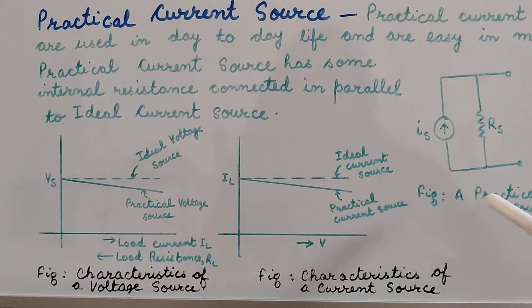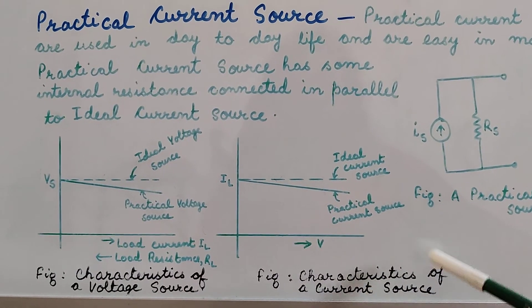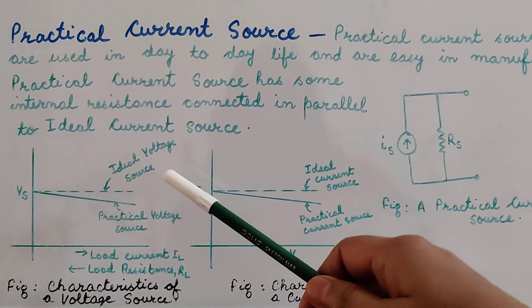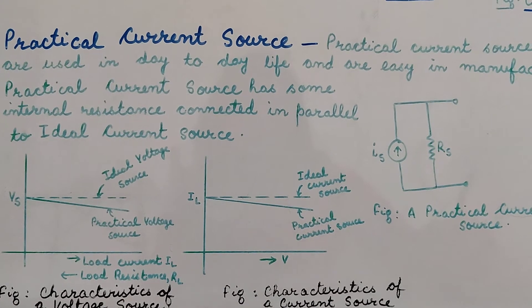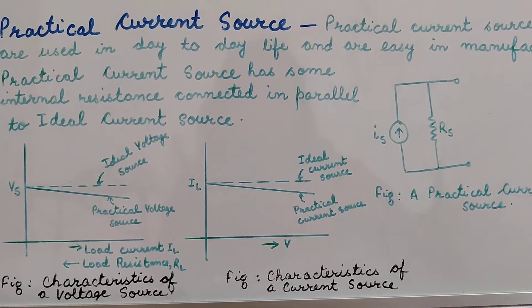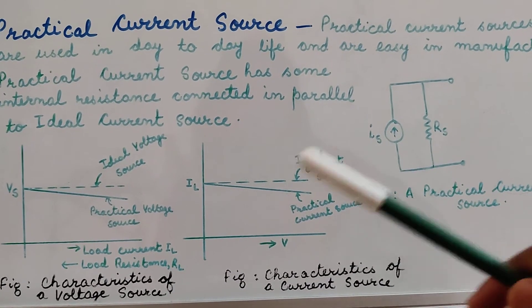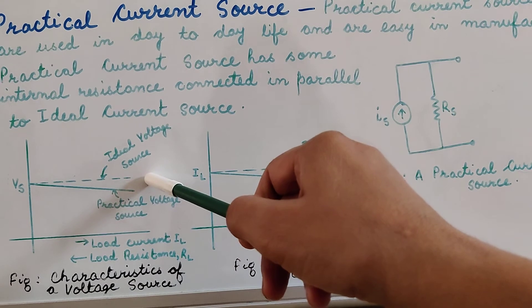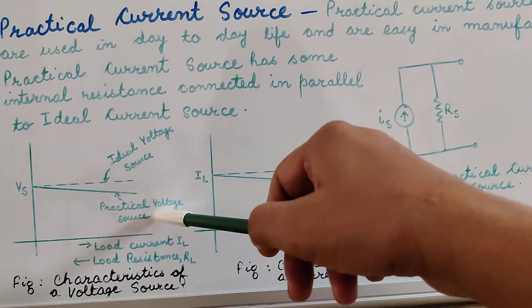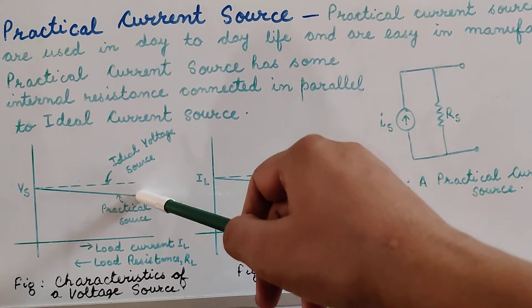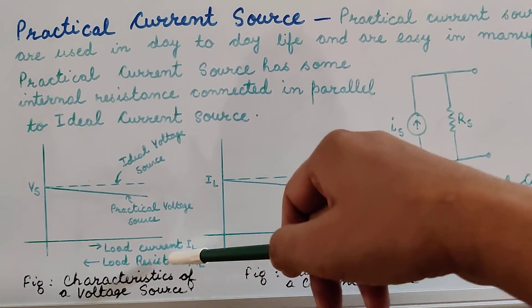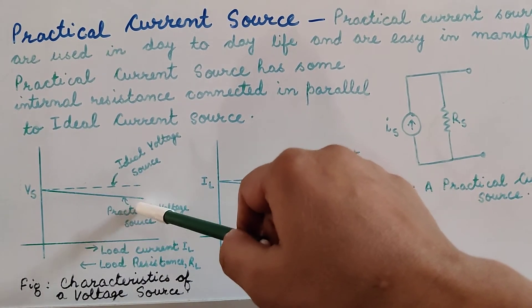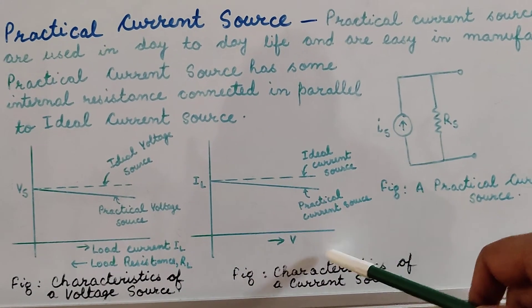Now let us see the characteristics of the voltage source and the current source. We have plotted both the ideal current source and the practical current source, and similarly both the ideal voltage source and the practical voltage source. From the characteristics of the voltage source, we find that the graph of the ideal voltage source is a straight line parallel to the axis, whereas the graph of the practical voltage source decreases with the value of the load current. The graph of the ideal current source is also a straight line parallel to the axis.